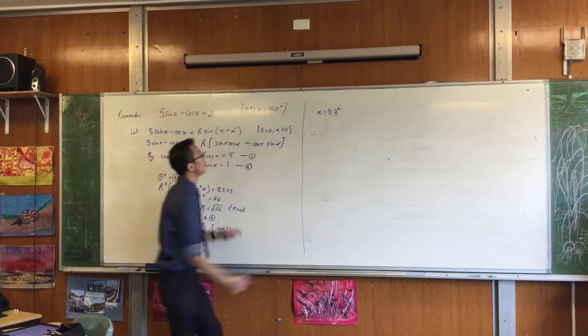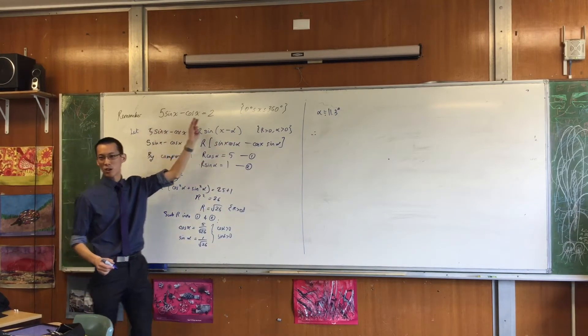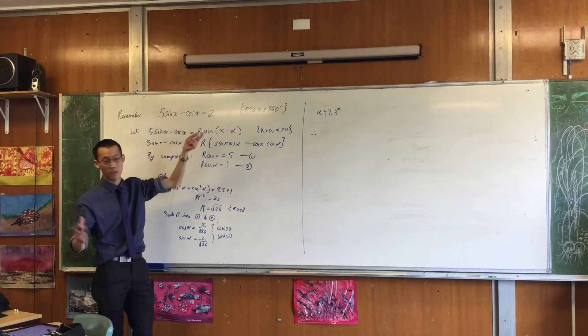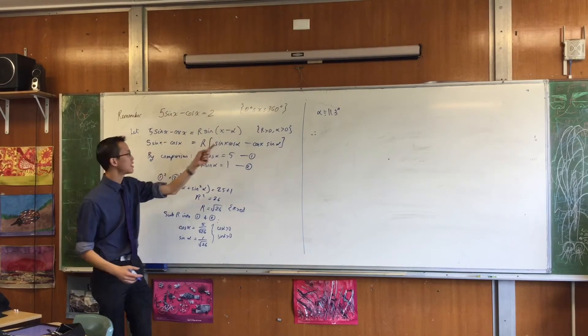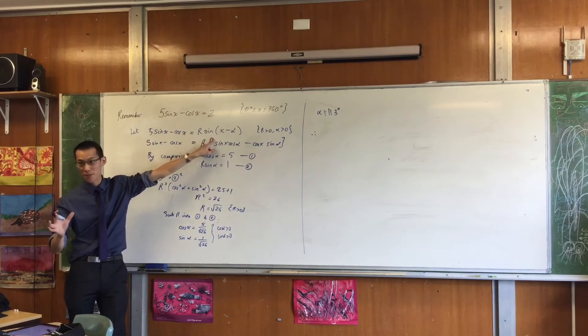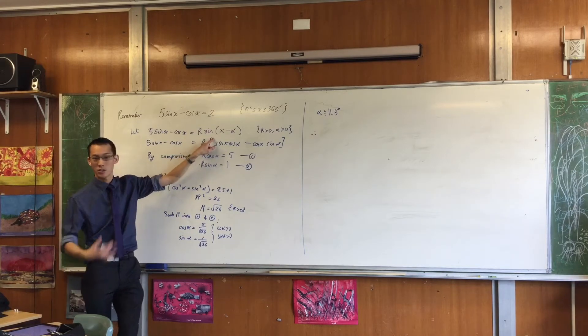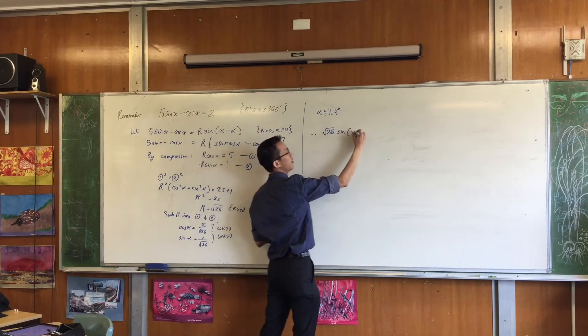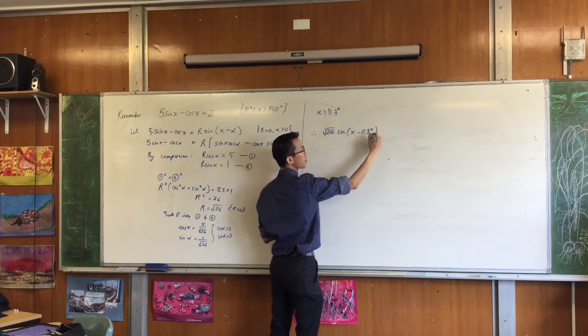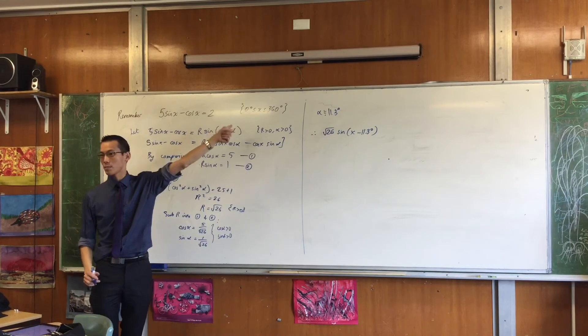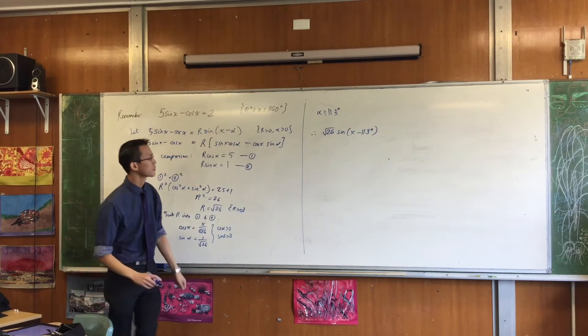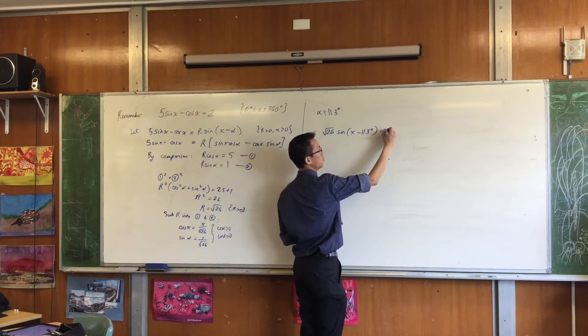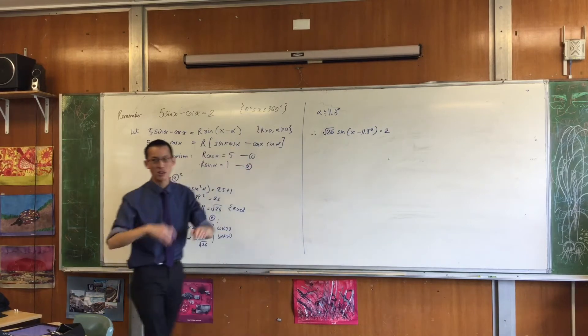So now I can say, therefore, I don't have to write 5 sin(x) - cos(x) = 2, because I don't know how to deal with that except with T results. I'm going to replace it with this new version of the same function, just dressed up more neatly. So I'm going to write down √26 sin(x - 11.3). That's R sin(x - alpha). That's equal to 2.